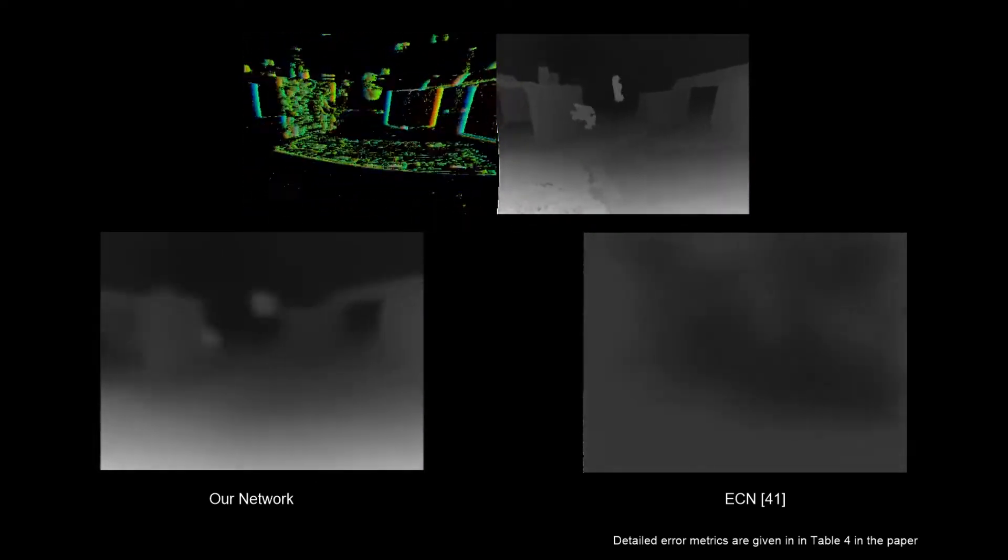Comparisons are shown to ECN, a similar method designed for driving scenes but not modeling moving object estimation. Notice our scene estimation provides much sharper boundaries, and the moving objects are estimated well, while they are hardly detected by ECN.